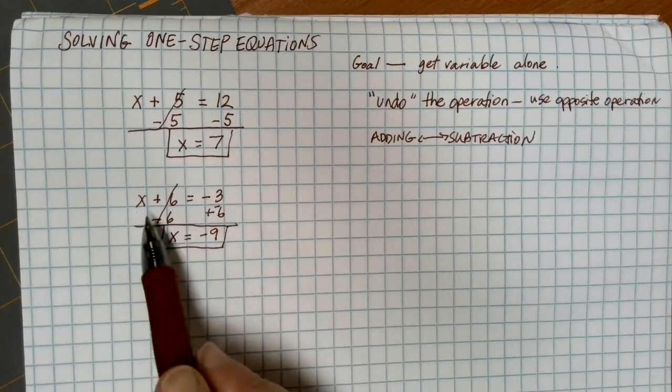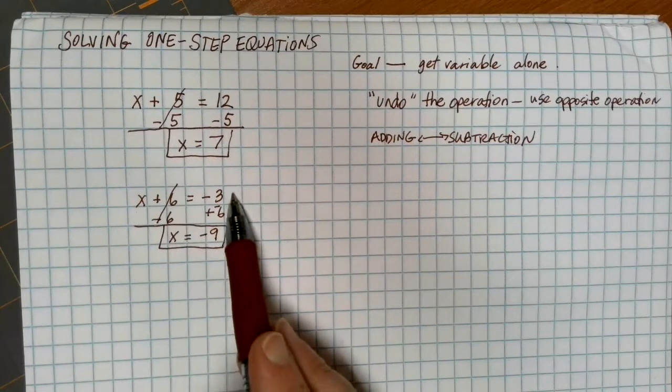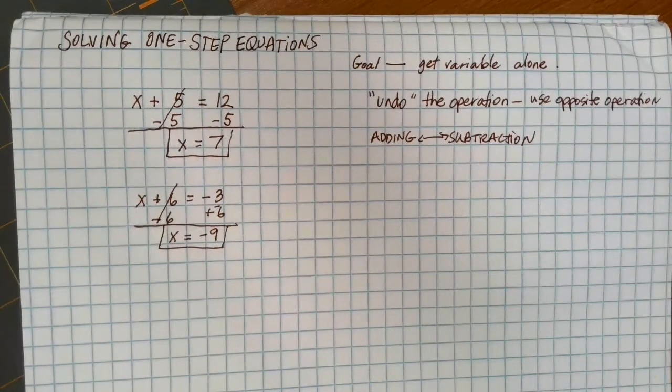Again, we can always double check, negative 9 plus 6 is equal to negative 3, and I found a good solution to my equation.